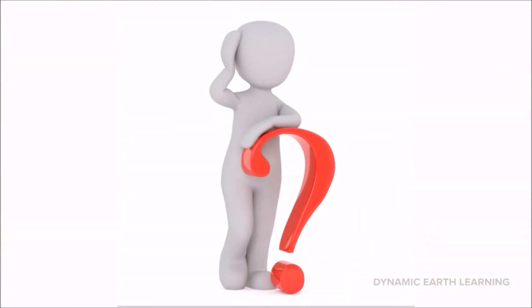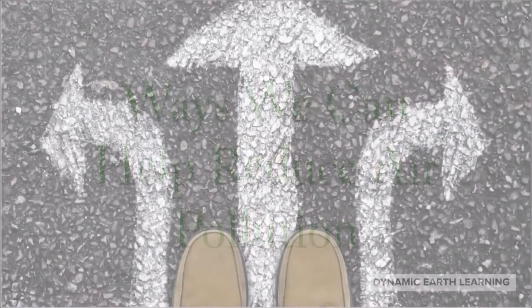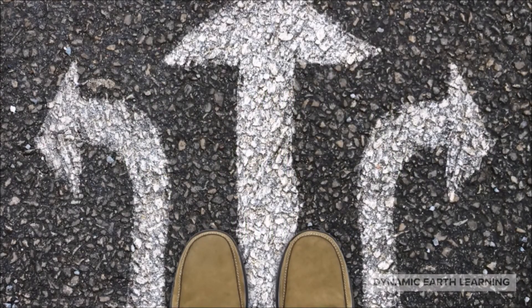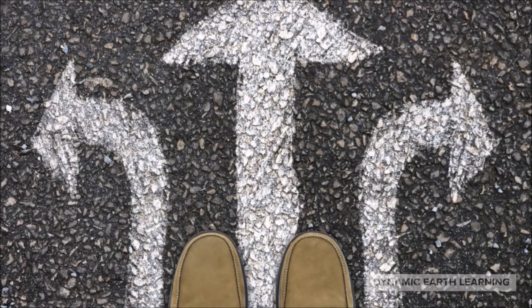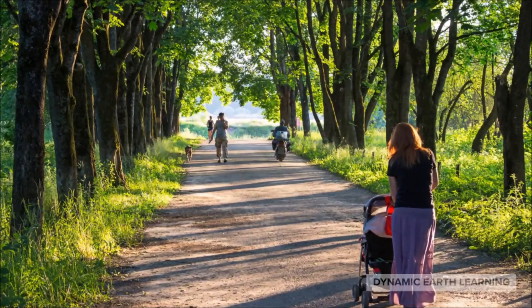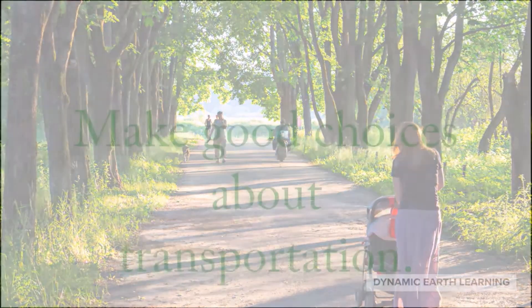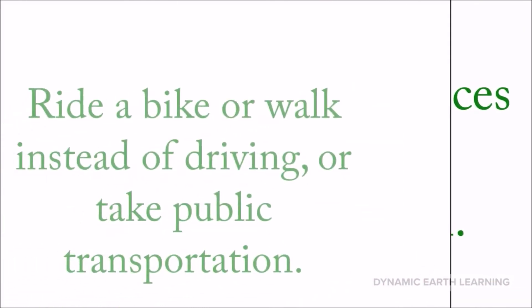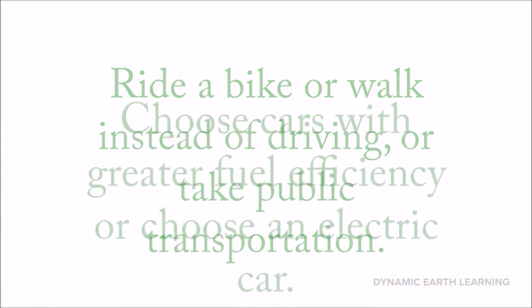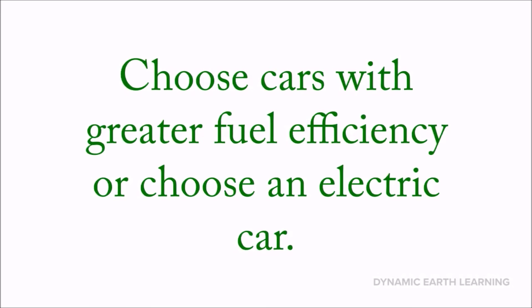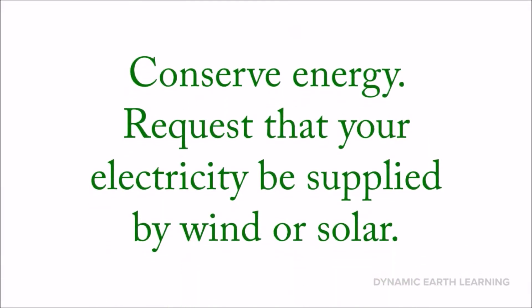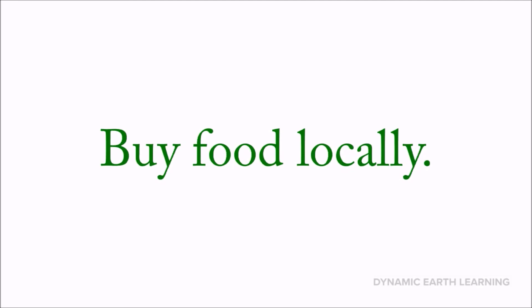Have you discovered anything about the air we breathe on a daily basis that you don't want to breathe in? Here are some ways we can help reduce air pollution. Every time we drive to school, use heaters or air conditioners, clean our windows, or style our hair, we're making choices that affect air pollution. Make good choices about transportation — ride a bike or walk instead of driving, or take public transportation. For driving, choose cars with greater fuel efficiency or choose an electric car. Conserve energy by requesting that your electricity be supplied by wind or solar. Buy food locally to cut down on fossil fuels burned in trucking or flying food in from across the country.